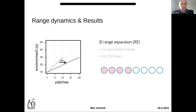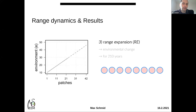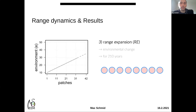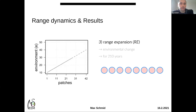In the third scenario, the species niche was again kept constant and environmental change drove range dynamics, but this time it led to a range expansion. This was because environmental change was asymmetric: highest rates of change in patch 42 and no change in patch 1. This could correspond to polar amplification, where environmental changes are more pronounced at high latitudes compared to low latitudes, and in this extreme version it allowed for a range expansion.